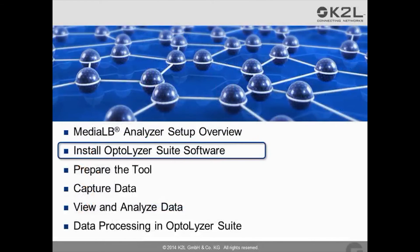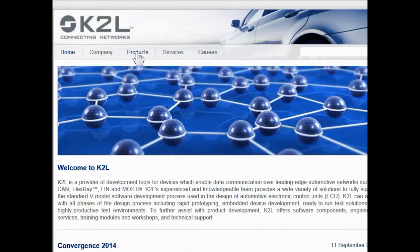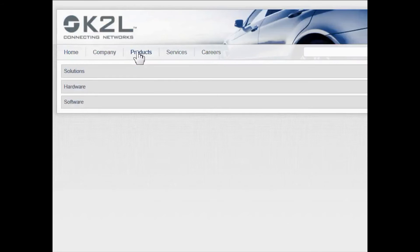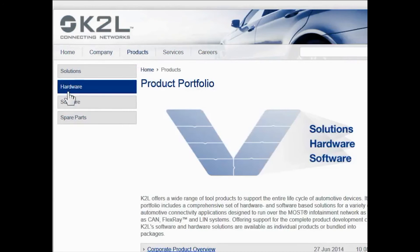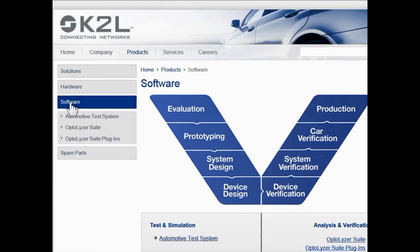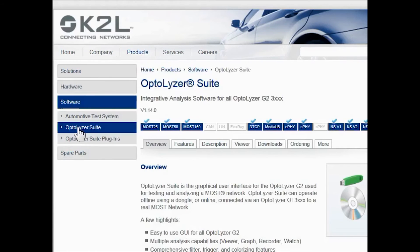The second section guides you through the installation of Optalyzer Suite software, which is needed for the analysis. First of all, we need the latest version of the software. Let's see where we can download it from K2L's website. You go to Products, then Software, then Optalyzer Suite, and move to the Downloads tab.